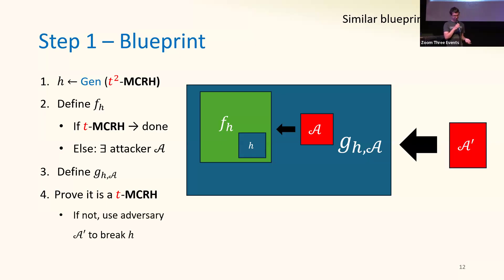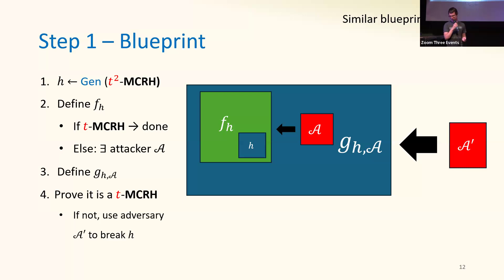How do we argue the second function family G is a T-MCRH? It's by contradiction. If it isn't, then there's an adversary A1 that attacks it, and we use A1 to break the original MCRH. To make this precise, there are three things to tell you: first, I need to define the functions F; then I need to define the functions G; and then I need to show how the reduction works.